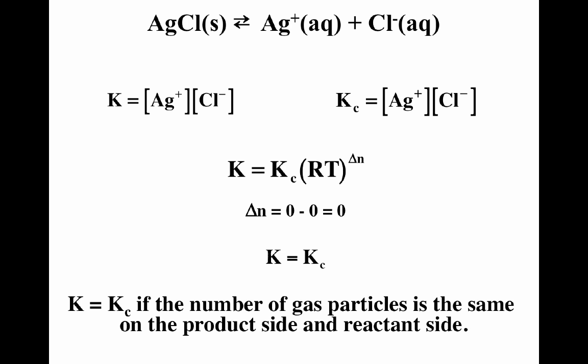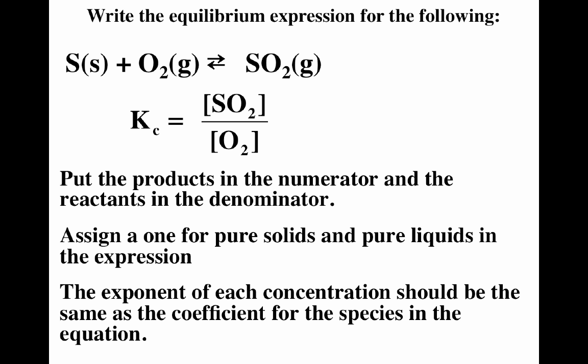Using K equals K sub C times RT to the delta N: here delta N is zero minus zero, which is zero, so K equals K sub C. For the reaction sulfur plus O2 going to SO2 gas — pure solids and pure liquids have activities of one and do not appear — the properly written K sub C is concentration of SO2 divided by concentration of O2. Products over reactants, coefficients become exponents, pure solids and pure liquids do not appear.